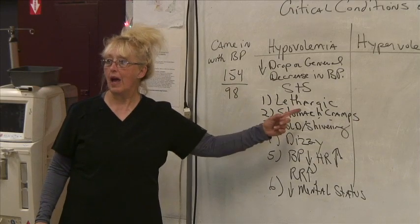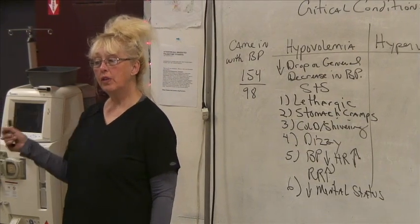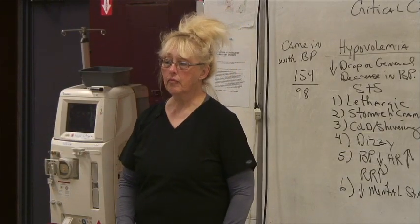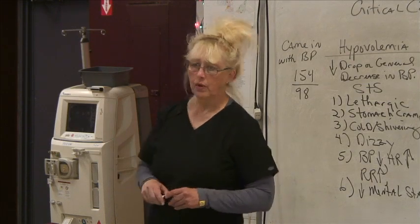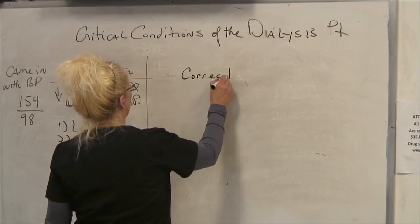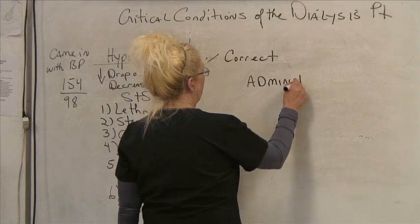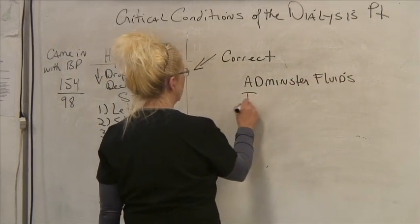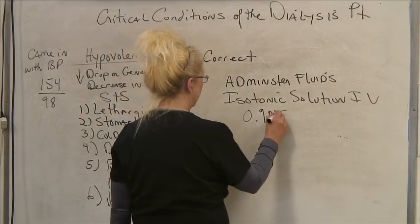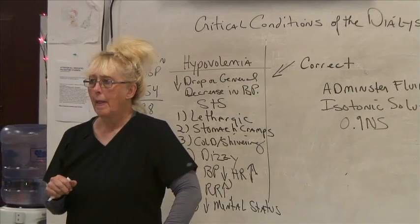They can die once they get into hypovolemic shock, which is one reason we always have an IV bag of 0.9 normal saline attached to the dialysis machine so we can help rehydrate them. To correct this scenario, we need to administer fluids — an isotonic IV of 0.9 normal saline. We're going to rehydrate them. If they're capable of sipping something, we might also ask them to sip something.